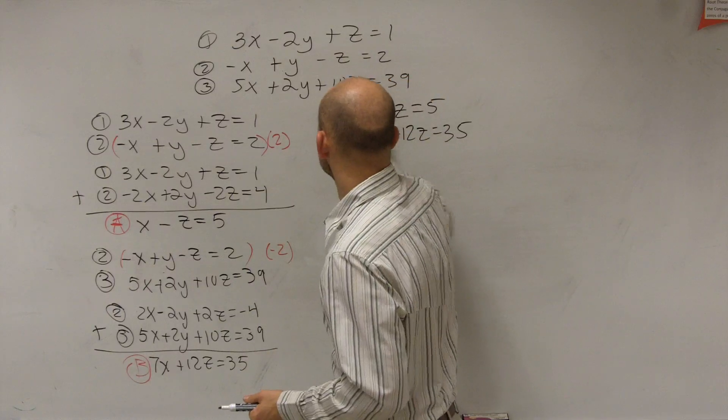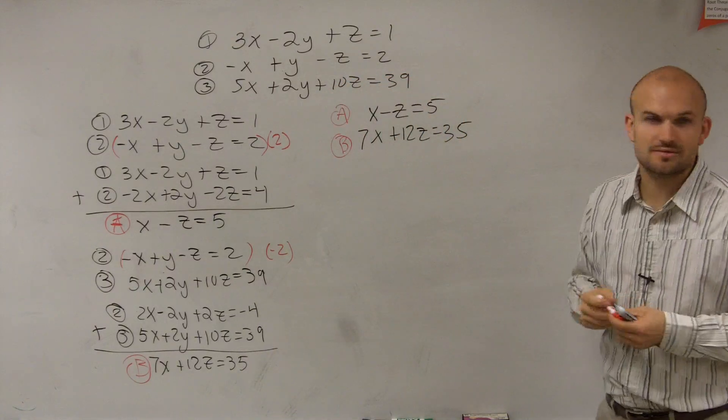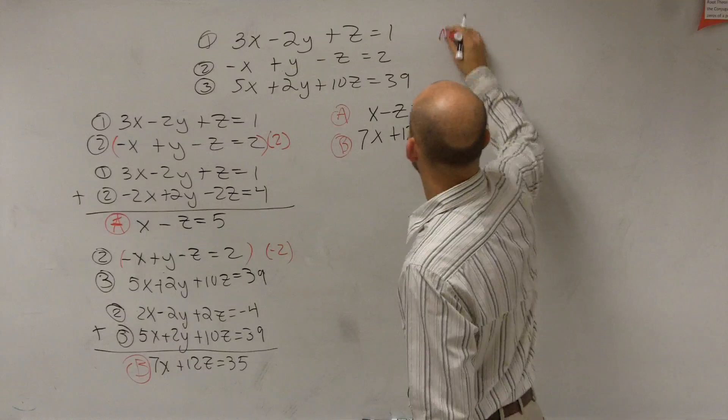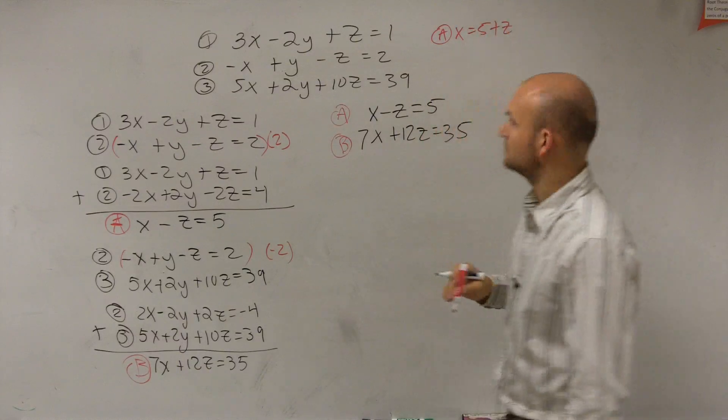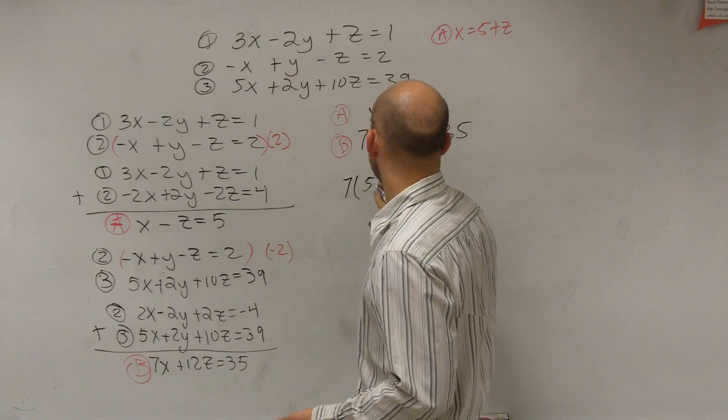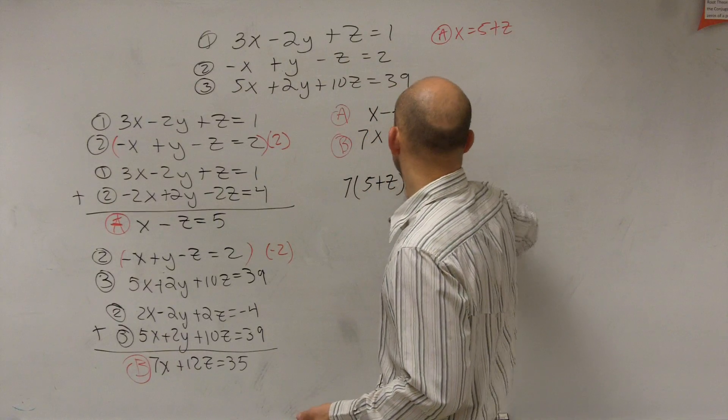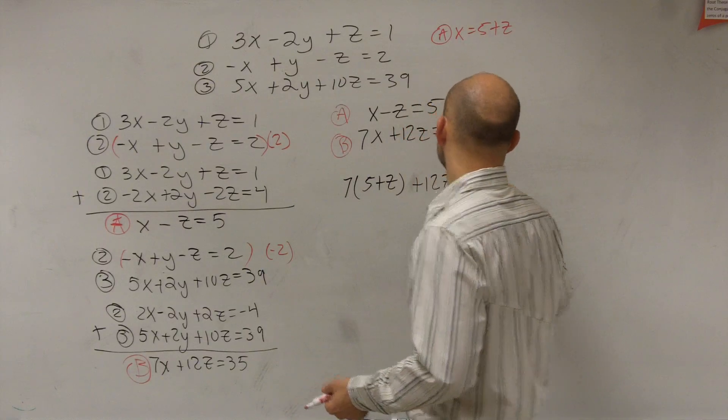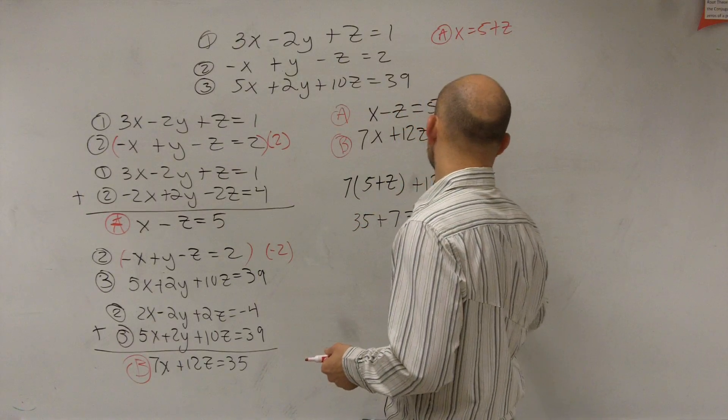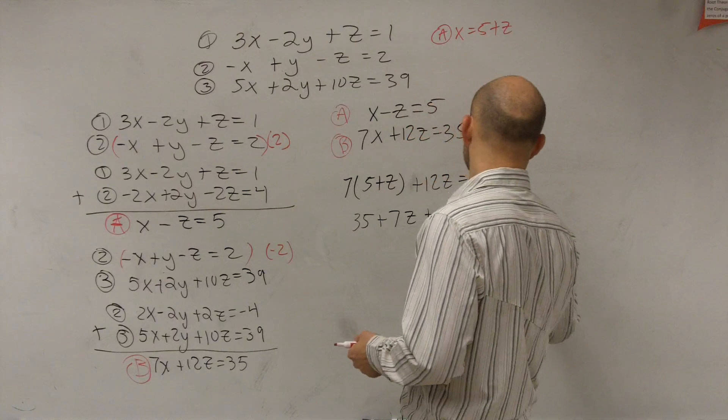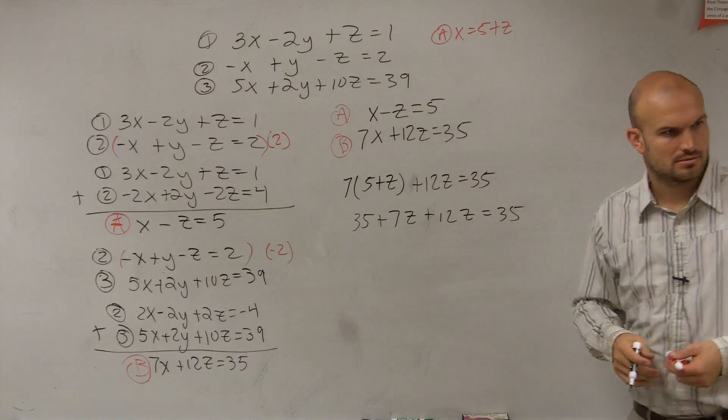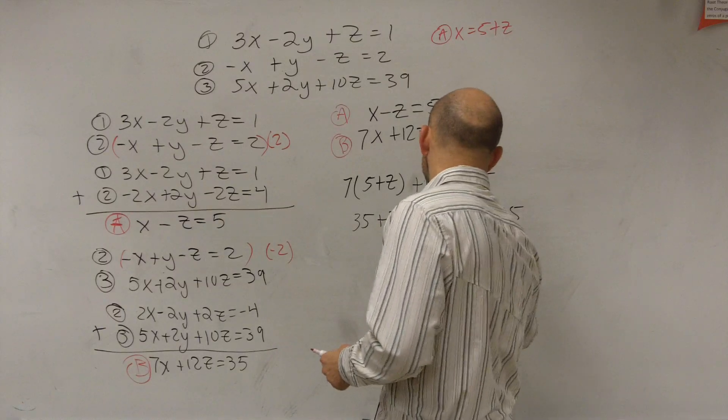Now, guys, you can use elimination, or you could also use substitution. I'm kind of actually a substitution fan, so let's plug in, let's solve for this. So I could say A could also be x equals 5 plus z, right? So if I was going to use substitution for this, I could say 7 times 5 plus z plus 12z equals 35. So therefore, I get 35 plus 7z plus 12z equals 35. Combine those together, you get 19z, subtract 35, you get z equals 0. Right, Demetri? z equals 0. Does everybody follow me with that?